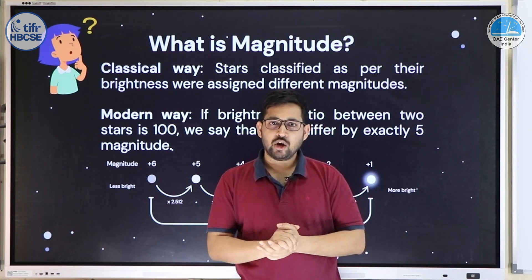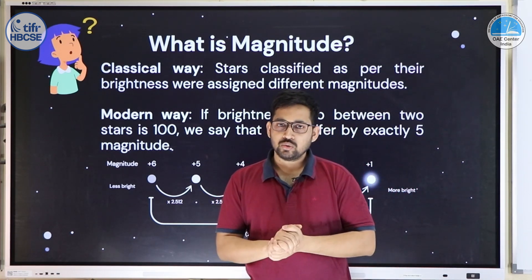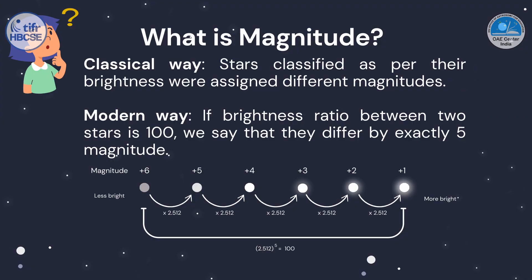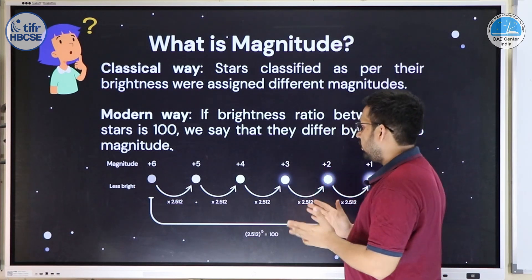Magnitude is a relative quantity used to define how bright or faint a star is. In ancient times, Greek astronomers defined them in groups: first magnitude stars were the brightest, then magnitude 2, 3, and up to magnitude 6, which were barely visible by the naked eye. These were more like ranking systems, and definite mathematical quantities were not defined.